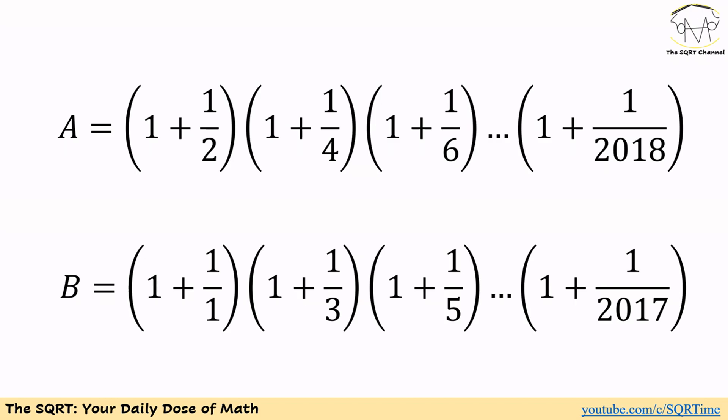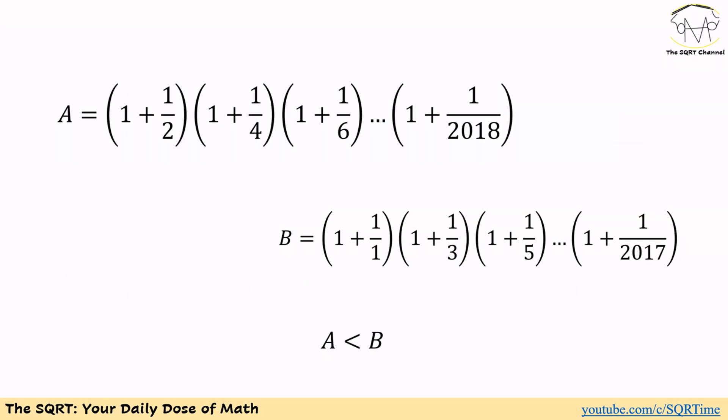B continues until 1 plus 1 over 2017. Now let's see how we can use A and B to solve this problem. We are going to show that A is less than B. Let's compare the first terms: for A we have 1 plus 1 over 2, and for B we have 1 plus 1 over 1. Ignoring the '1 plus', we compare the fractions.